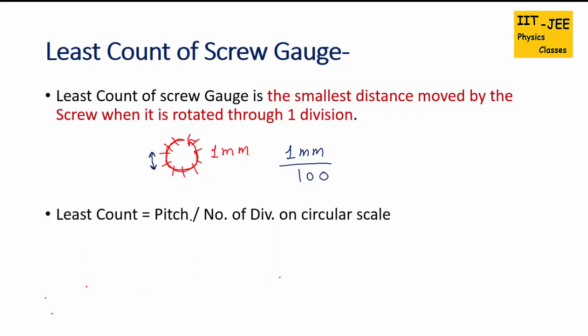You can also use the formula for it. Least count equals pitch divided by number of divisions on circular scale. Pitch is 1 millimeter and number of divisions on circular scale is 100. So you will get the distance for 1 division only, that is 0.001 millimeter. This is the least count of screw gauge. You can also convert it to centimeters. So multiply this number by 10, that will give us 0.01 centimeter. I hope you understand this topic.